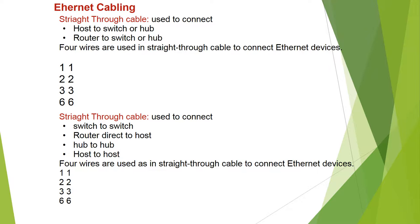Crossover cable is used to connect router direct to host, hub to hub, and host to host. Four wires are used, paired as 1-1, 2-2, 3-3, 6-6.